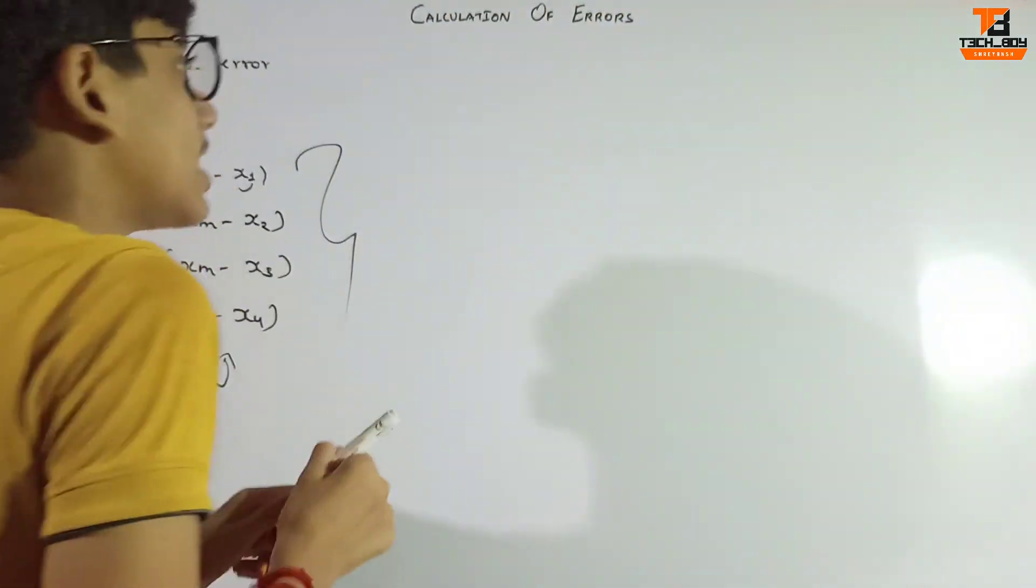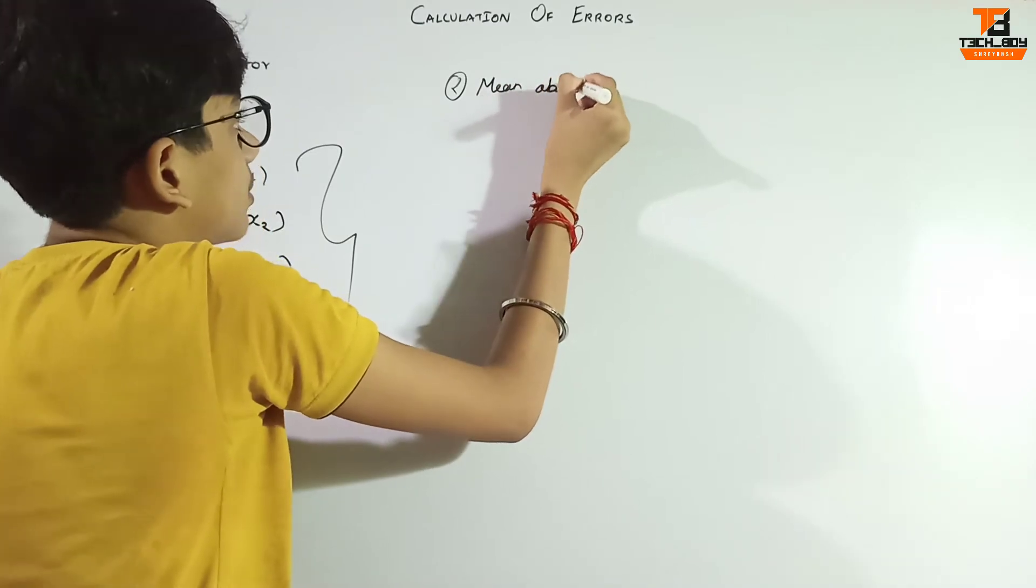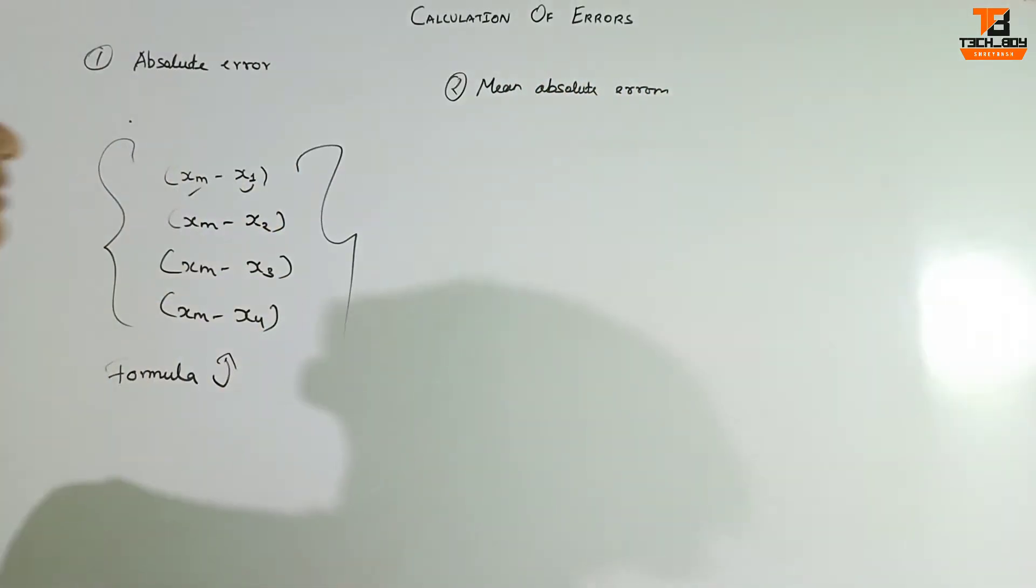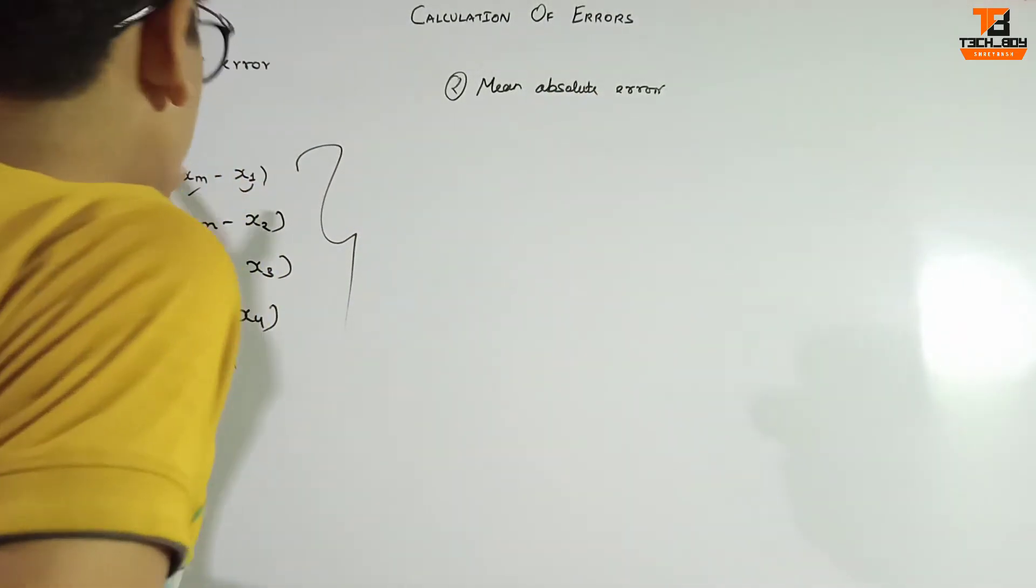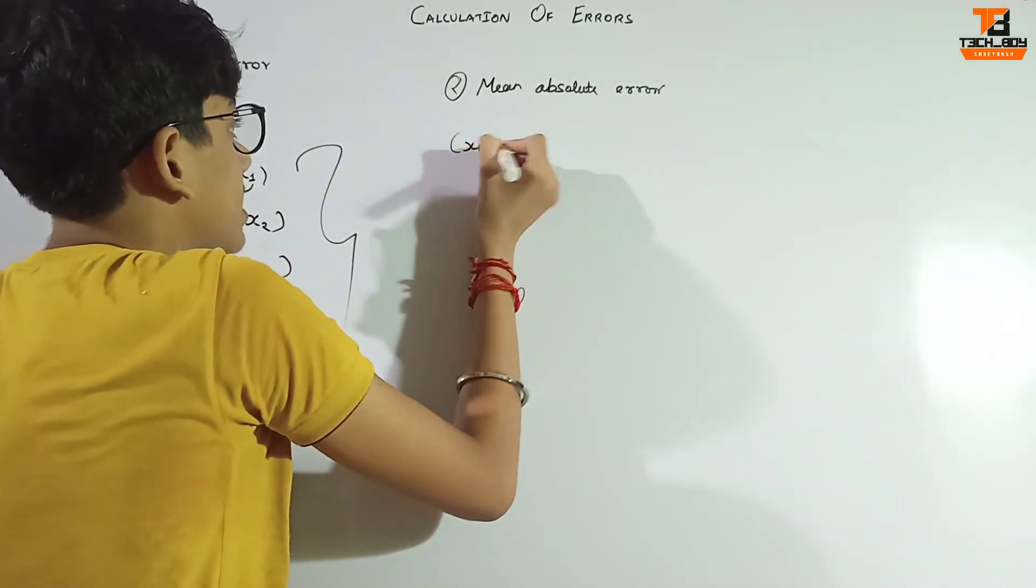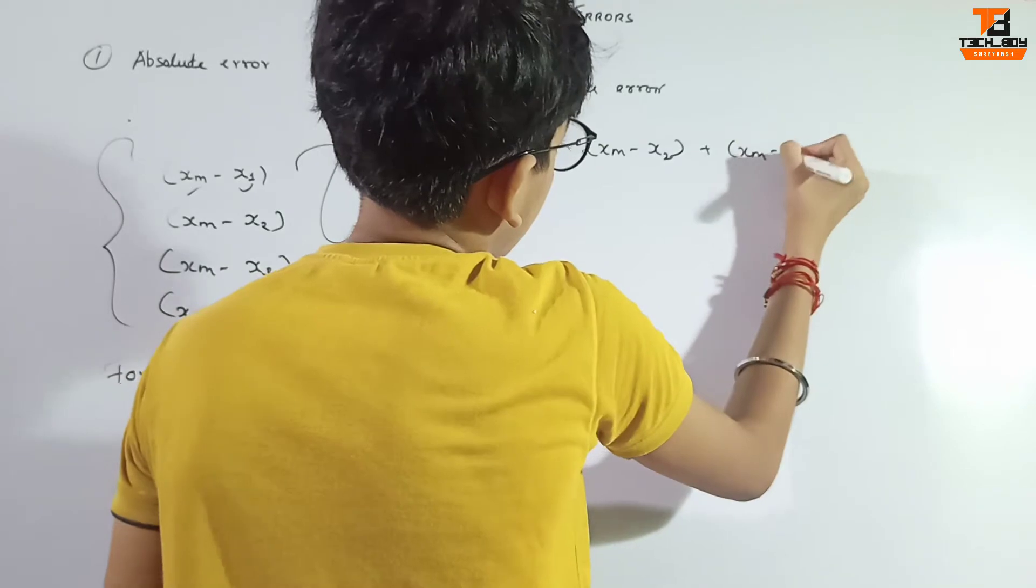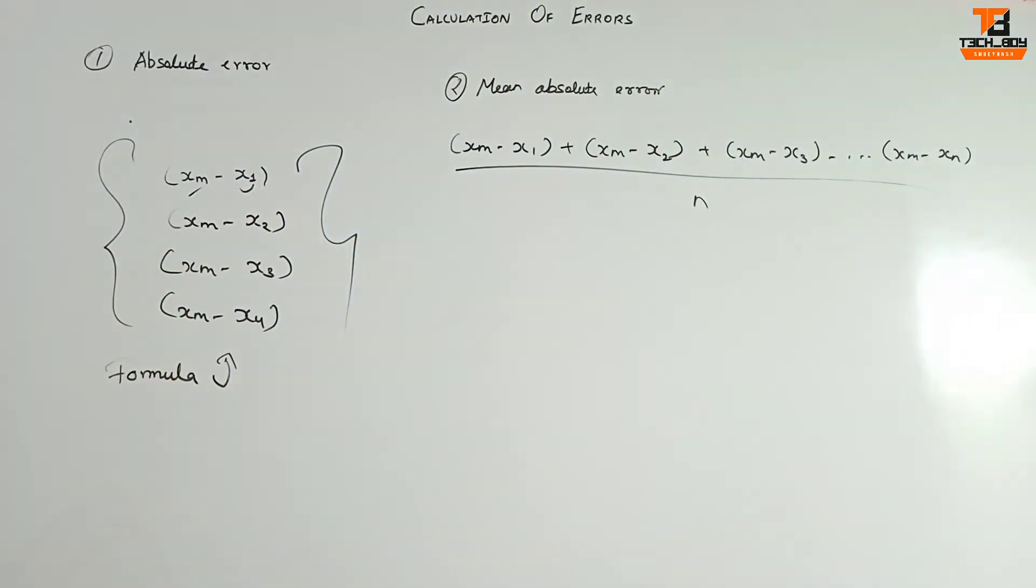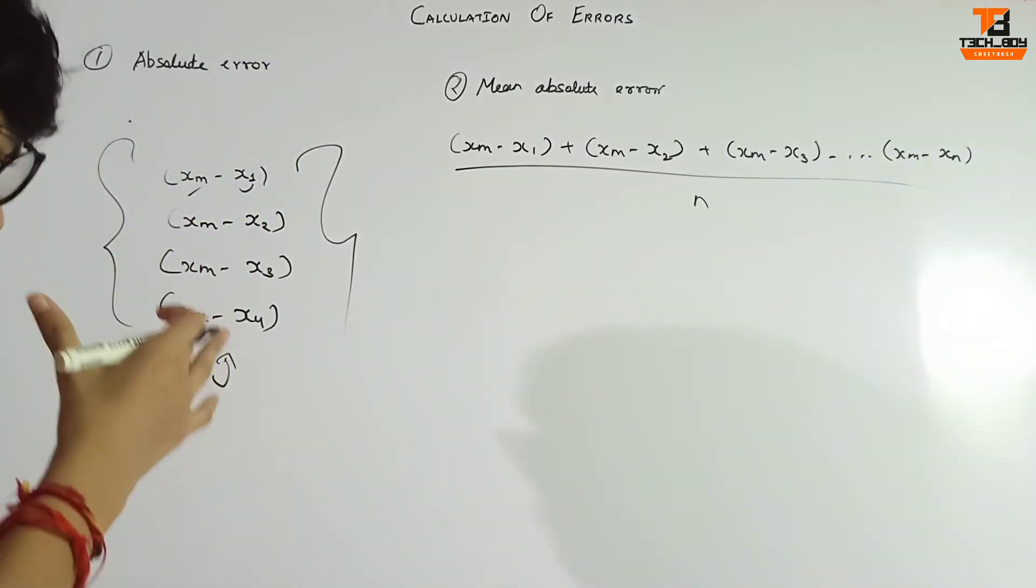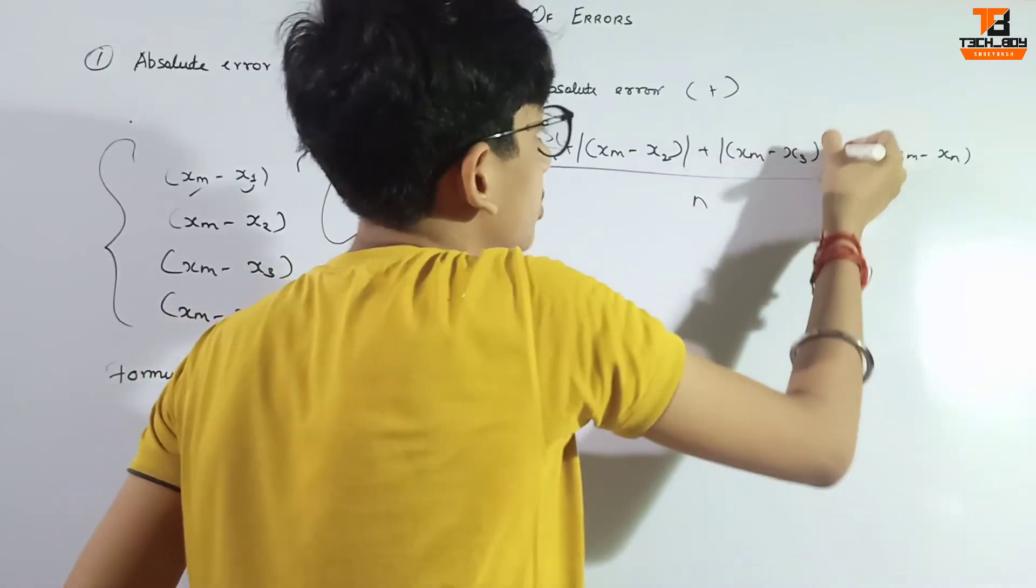The next one is mean absolute error. That means absolute error is the mean. By the topic itself we can just classify it. It means xm minus x1 plus xm minus x2 plus xm minus x3 dot dot dot xm minus xn divided by number of terms. It's a simple thing, we are going to understand. And all this is compulsory, it will be positive because this is all in the mod. And the mod is positive.